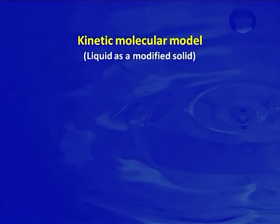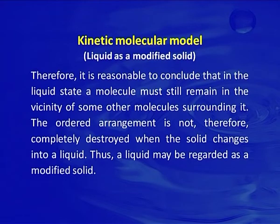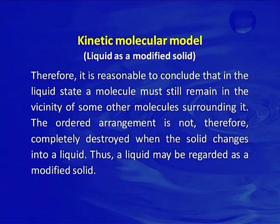Another model is liquid as a modified solid. In solid there is a well-ordered arrangement of molecules throughout the whole mass, and each molecule is surrounded by other molecules in a particular symmetrical pattern. On melting, the solid expands only about 10 percent in volume or 3 percent in intermolecular spacing. Therefore, it is reasonable to conclude that in the liquid state a molecule must still remain in the vicinity of some other surrounding molecules. The ordered arrangement is not completely destroyed when the solid changes into a liquid. Thus a liquid may be regarded as a modified solid.